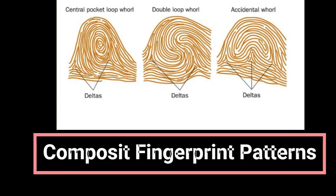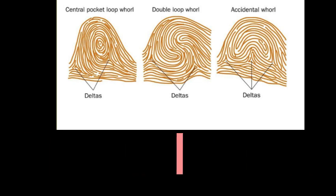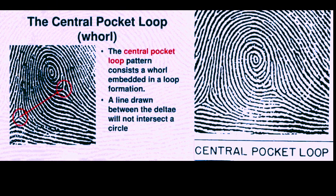Now we will discuss the composite fingerprint patterns. There are three types of composite fingerprint patterns: the central pocket loop, the double loop, and the accidental. The central pocket loop pattern consists of a whorl embedded in a loop formation. A line drawn between the two deltas will not intersect the circle, as you can see on the left side of the screen.